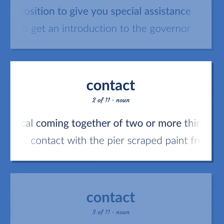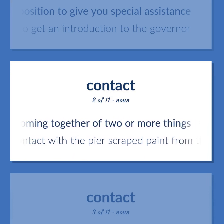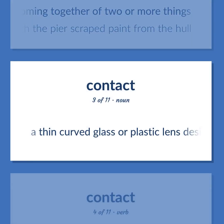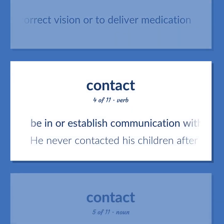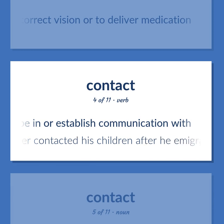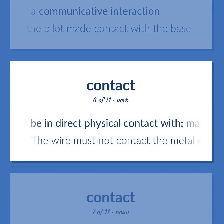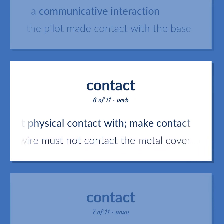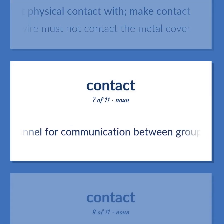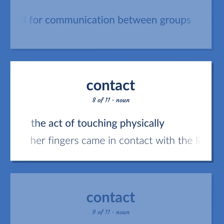The physical coming together of two or more things. Contact with the pier scraped paint from the hull. A thin curved glass or plastic lens designed to fit over the cornea in order to correct vision or to deliver medication. Be in or establish communication with. He never contacted his children after he emigrated to Australia. A communicative interaction. The pilot made contact with the base. Be in direct physical contact with; make contact. The wire must not contact the metal cover. A channel for communication between groups. The act of touching physically. Her fingers came in contact with the light switch.